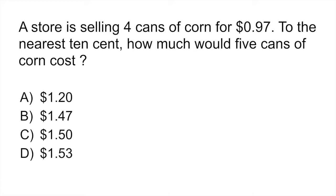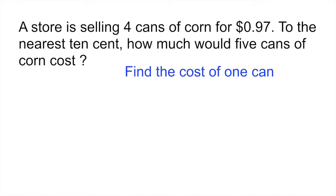This problem involves you doing three different things. The first thing that you want to do is find out how much one single can of corn costs. So the way you do this is you're going to take that 97 cents and divide it by four. That would give you 24 cents, which is how much one single can costs.